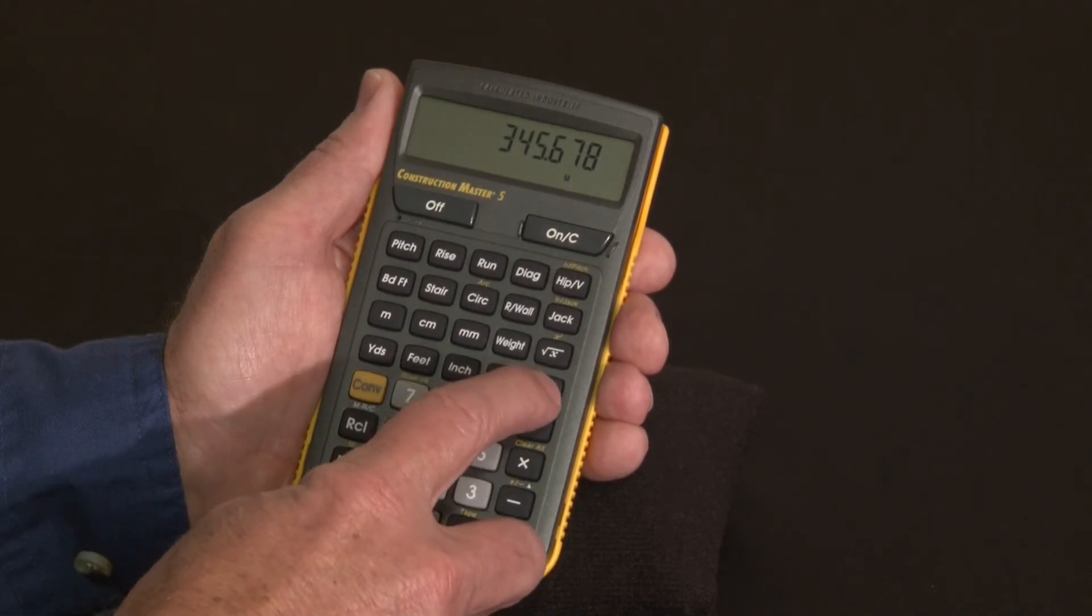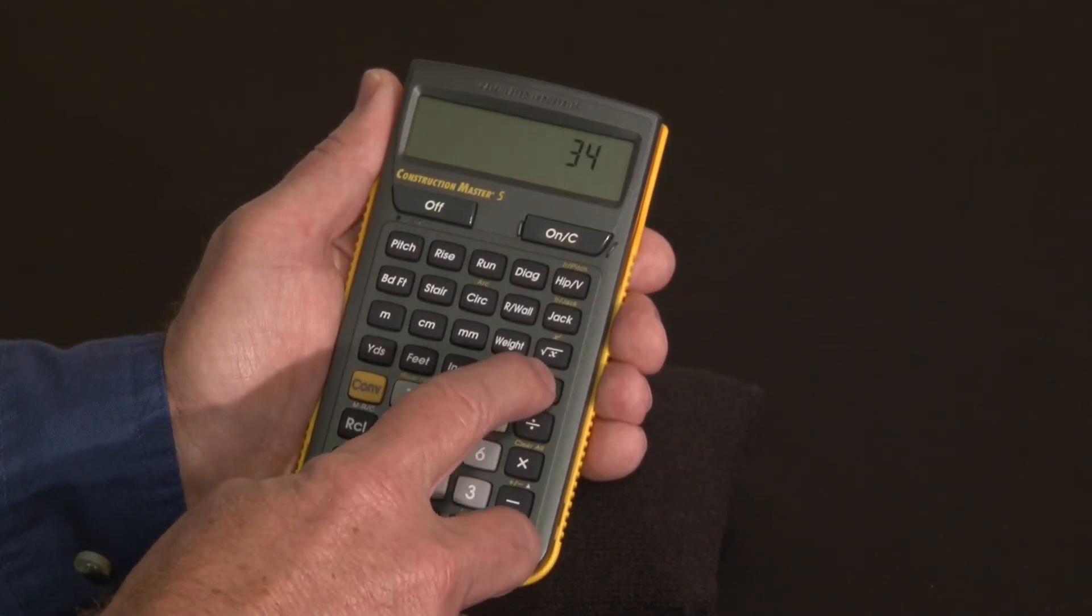There's a backspace key here to allow you to back out digits one unit at a time, one digit at a time.